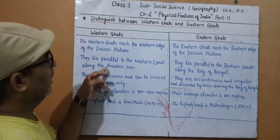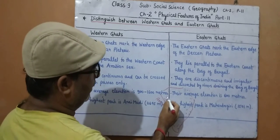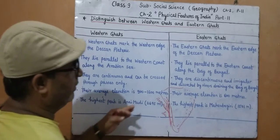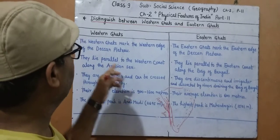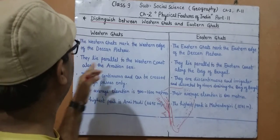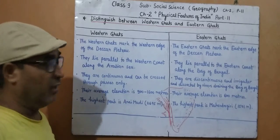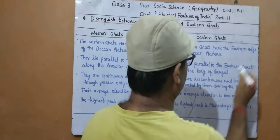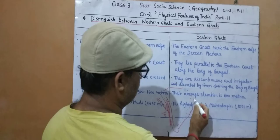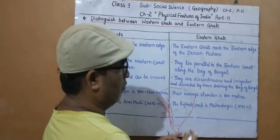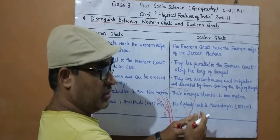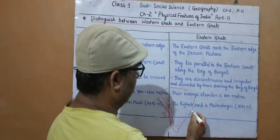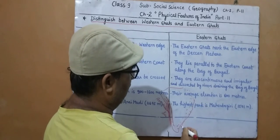The Western Ghats lie parallel to the western coast along the Arabian Sea, and the Eastern Ghats lie parallel to the eastern coast along the Bay of Bengal.